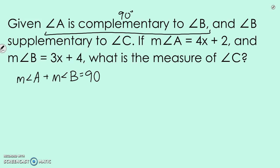So whatever A is, the measure of A plus the measure of B has to equal 90. Then they say B is supplementary to C. So the measure of angle B plus the measure of angle C, they're supplementary, so they add to 180. If the measure of angle A is 4x plus 2, and the measure of angle B is 3x plus 4, what is the measure of angle C?